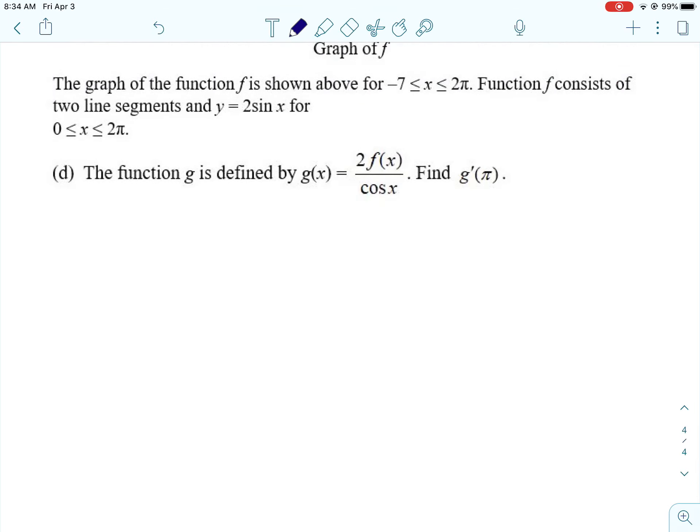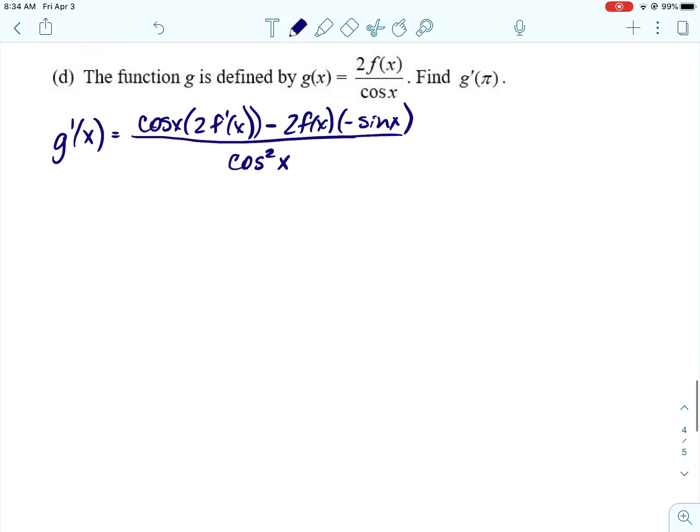Okay, and then one more that's kind of similar to that, but instead we're going to be using the quotient rule. Alright, so what do we find? We're finding, we have a new function, g. This is a quotient, and we're going to find g prime of π. So, first we'll find g prime of x. So, we'll do low, d high, minus high, d low, over low squared. Alright, then we'll go back and put in π.